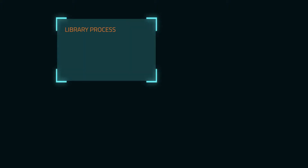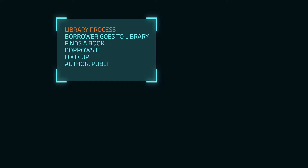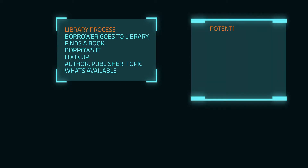The first thing to do when considering a data model is to understand the business or operation processes. In the case of a library, a borrower goes to a library, finds a book and borrows it. They should be able to look up the book by author, publisher, topic, etc. And we should know what books each library has available, what's checked out, and when they're due back. Knowing this gives us an idea of what sort of tables and fields we'll want.